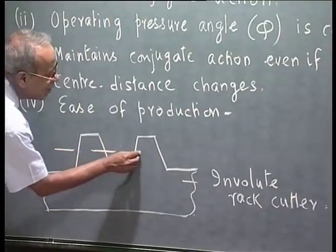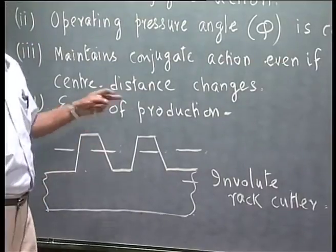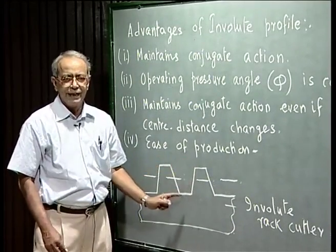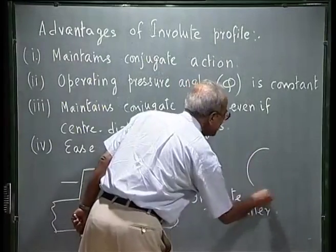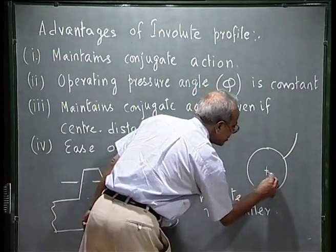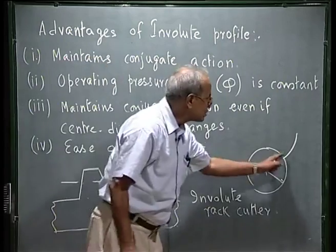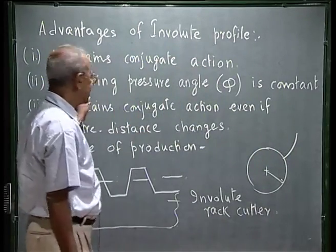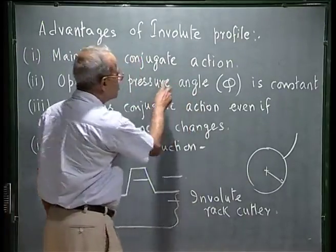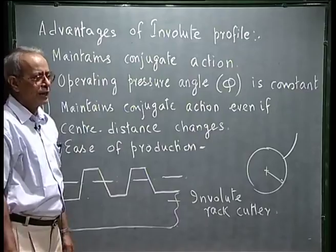Why is the involute of a rack a straight line? This point will be cleared in today's lecture a little later — that the involute of a straight line is another straight line, just as the involute of a circle is a curve. When the radius of the base circle goes to infinity, the gear gets converted into a rack, and the tooth profile also becomes a straight line. We will now return to the figure to show the advantage of the pressure angle remaining constant.